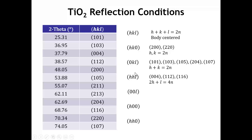For the HHL peaks — where the first two indices are equal — we have only three: 0-0-4, 1-1-2, and 1-1-6. The L values are always even numbers. Looking at the International Tables, one of the conditions is 2H plus L equals a multiple of 4. Checking: 2×0 + 4 = 4; 2×1 + 2 = 4; 2×1 + 6 = 8 — all multiples of 4. We also note that the 1-1-4 peak is missing, which would satisfy less stringent conditions, so we go with this as our criterion for the HHL peaks.